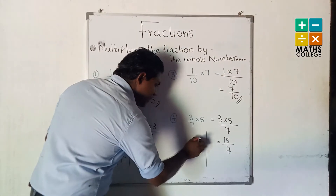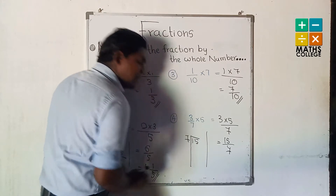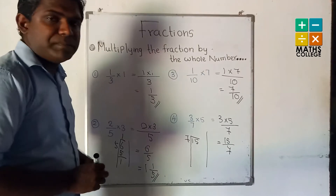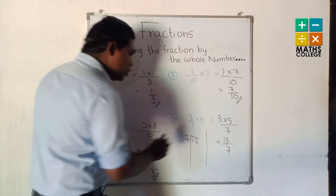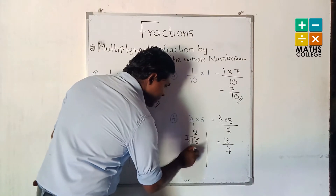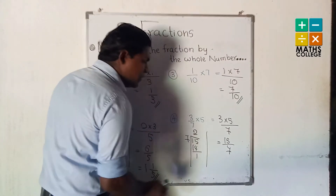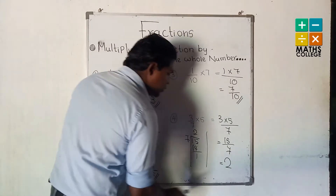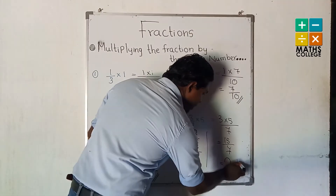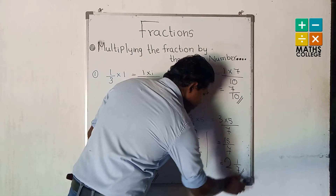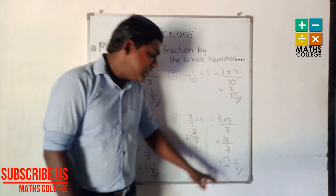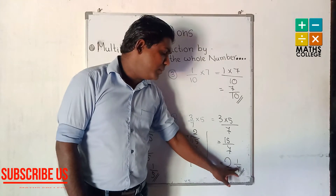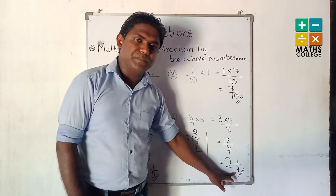15 divided by 7: how many times does 7 go into 15? Twice. 2 multiplied by 7 is 14. Remainder is 1. So the answer is 2 and 1 upon 7, because the remainder is 1 and the denominator is 7.